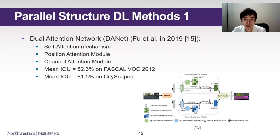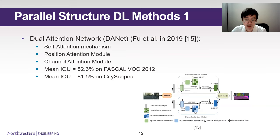Parallel deep learning methods are approaches where researchers use two or more separate networks running in parallel to process different features and then combine the results at the end. An example is the dual attention network proposed by Fu et al. in 2019, which utilizes self-attention mechanisms. A ResNet first processes the input image with dilated convolution. The output is then divided into two copies and processed by two parallel attention modules: one focuses on the spatial attention of the image, while the other focuses on the channel feature attention. The mean IOU for the Pascal 2012 testing set is 82.6%.